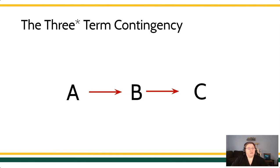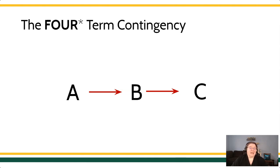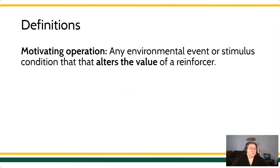We talk about the behavior itself — we define it, we measure it, we figure out when it happens and what makes it go up and what makes it go down. And we talk about the consequences, the effect that the behavior produces in the environment. This is itself a little simplistic, because we've also talked about the four-term contingency — we also want to be thinking about establishing operations or motivating operations, those things that change the value of reinforcement. A motivating operation is some sort of environmental event that's going to change or alter the value of the reinforcer.